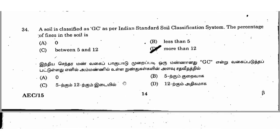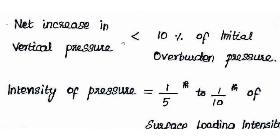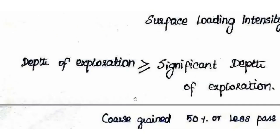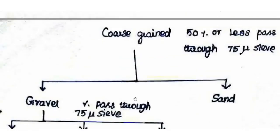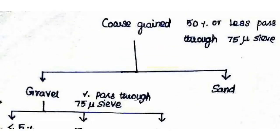Next question: Soil is classified as GC as per the Indian Standard Soil Classification System. The percentage of fines in the soil is — the right answer is option D, more than 12%. Soil classified as GC — let's look at the components of this classification.